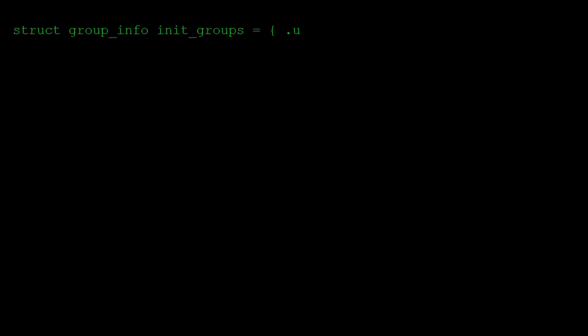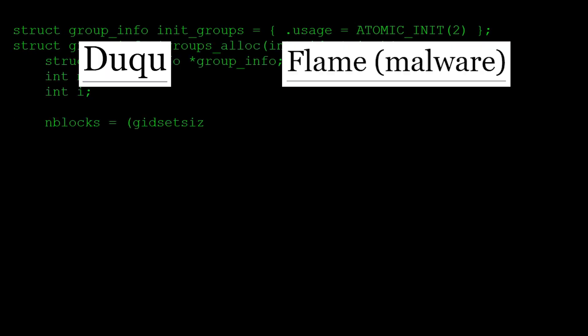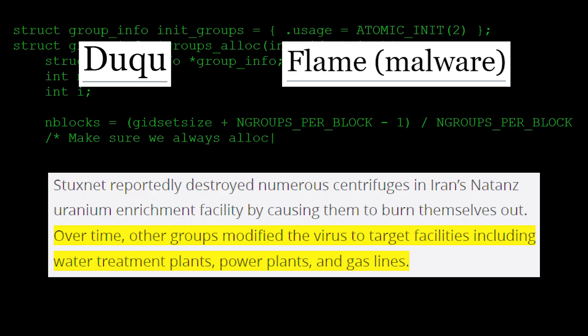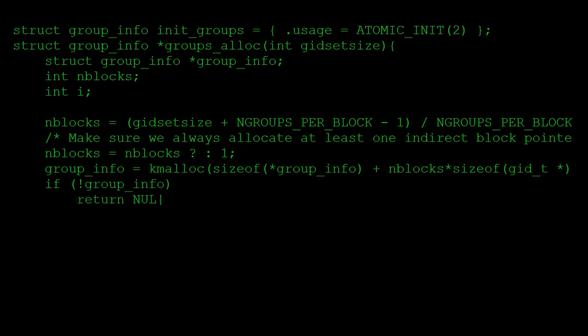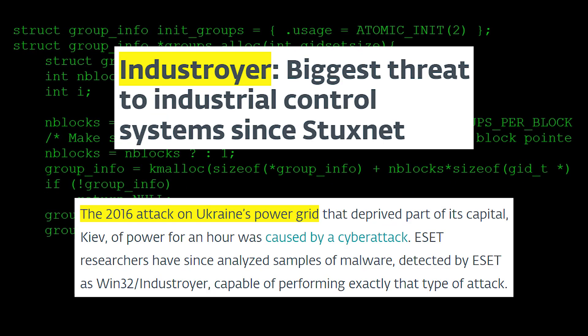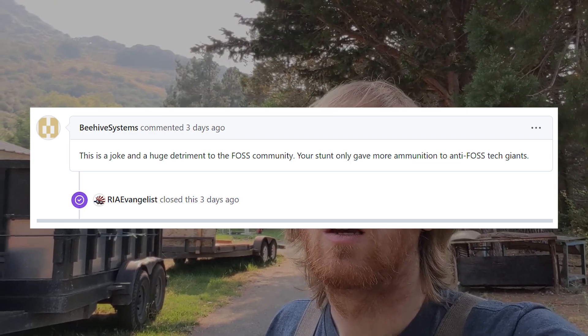Once Stuxnet had been isolated and understood on a cursory level, variants and mutations of the program began to spring up, their usage much less noble than dismantling nuclear facilities. The Pandora's box of Stuxnet had been opened, and we've had to deal with the resultant chaos ever since. In the same vein, some two-bit programmer adding malware to their distro is now just a thing. Whereas free and open source software has been gaining prominence and proving its worth in recent years, there is now legitimate concern and doubt in the space.